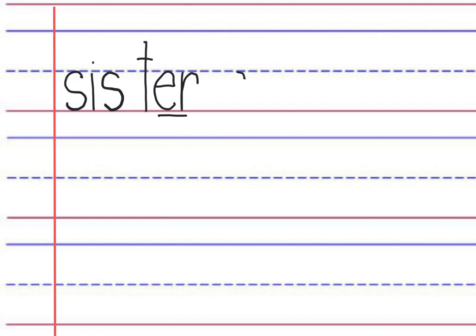We write s, i, s. Leave a space. T, er — underline the two-letter phonogram. We read sister.